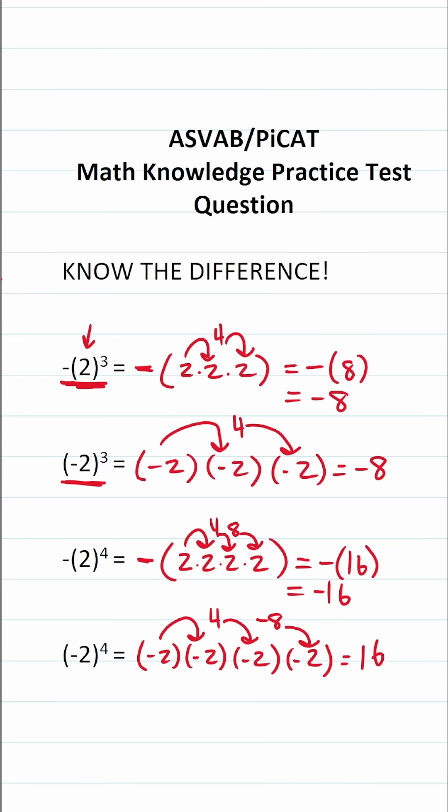Pay very close attention to where the negative is. If the negative is outside the parentheses, you leave it outside the parentheses. If it's inside parentheses, you include it as you do your multiplication.